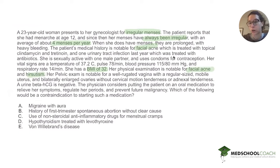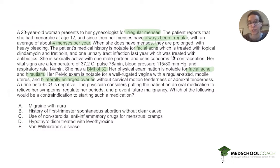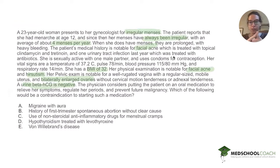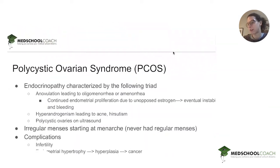Her pelvic exam is notable for bilaterally enlarged ovaries. And of course, in any reproductive-age woman presenting with amenorrhea, you always want to know if she's pregnant — her HCG is negative. So we have enlarged ovaries, signs of hyperandrogenism with the hirsutism and acne, and oligomenorrhea — which is the classic triad for polycystic ovarian syndrome.